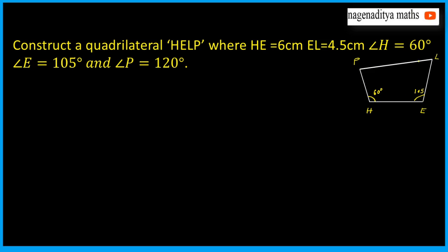To construct this particular quadrilateral, we need the angle L. So, before construction, we need some analysis. We need the angle L. We know that in a quadrilateral, the sum of the four angles is 360 degrees.